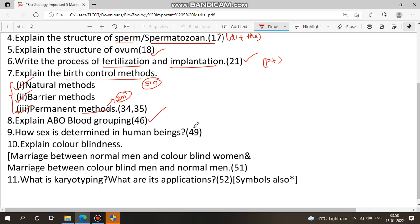Next ninth question: how sex is determined in human beings, page 49. Next 10th question is compulsory question in all exams, half-yearly, quarterly, public, all exams. Compulsory 3 marks, this is one case. If you do it with 5 marks, explain color blindness. You can explain two cases: marriage between normal men and color blind women, or color blind men and normal women.